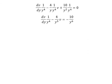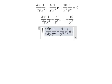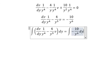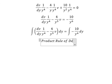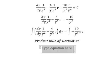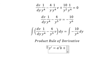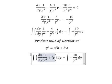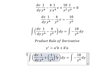Next we put the integration sign on both sides. So this one gives us 10 over y to the power of 5. Now we can use the product rule of derivatives: the first derivative of y equals the first derivative of a multiplied by b, plus the first derivative of b multiplied by a. This term is the first derivative of a multiplied by b, and this one is the first derivative of b multiplied by a.